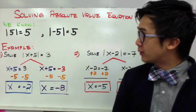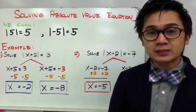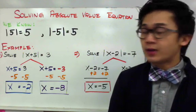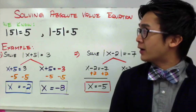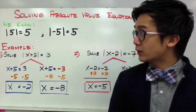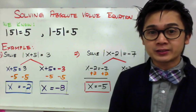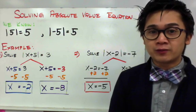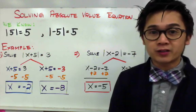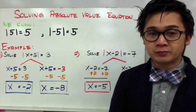We know that all numbers, whether positive or negative, if inside the absolute value symbol, will turn into a positive. The reason is because the definition of absolute value is the distance between your number from 0. So it's always going to be positive because it represents the distance of a number from 0.